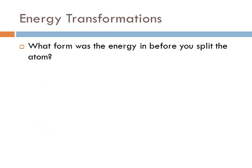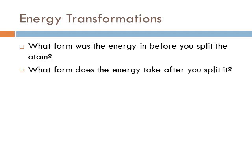Here are some review questions. What form is energy in before you split the atom? It's in the form of mass. What form does the energy take after you split it? The particles shoot off and it becomes kinetic energy. And how do you actually get electricity out of that kinetic energy?